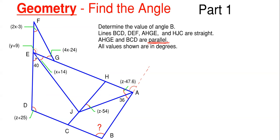To find the angle at E, we're going to utilize triangle EFG and the straight line DEF. Let's work on that to get our variables x, y, and z, and then we can find the angle we're looking for. Let's start with triangle FEG.